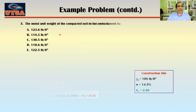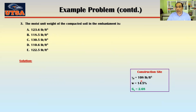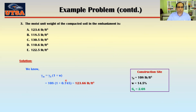The next question asks for the moist unit weight of the compacted soil in the embankment. We know γd = 108 pcf, w = 14.5%, and Gs = 2.68. Using γmoist = γd × (1 + w), we plug in 108 × (1 + 0.145) — remember to express water content as a decimal, not a percentage. The moist unit weight is 123.66 pounds per cubic feet.